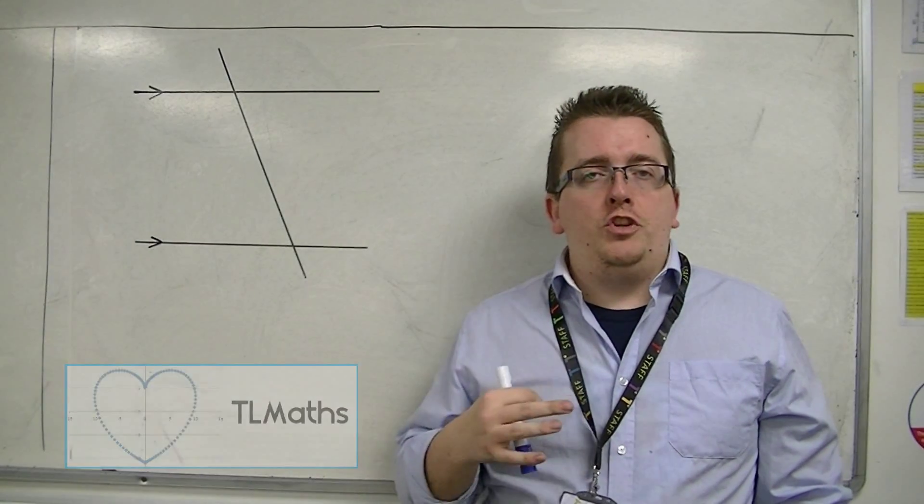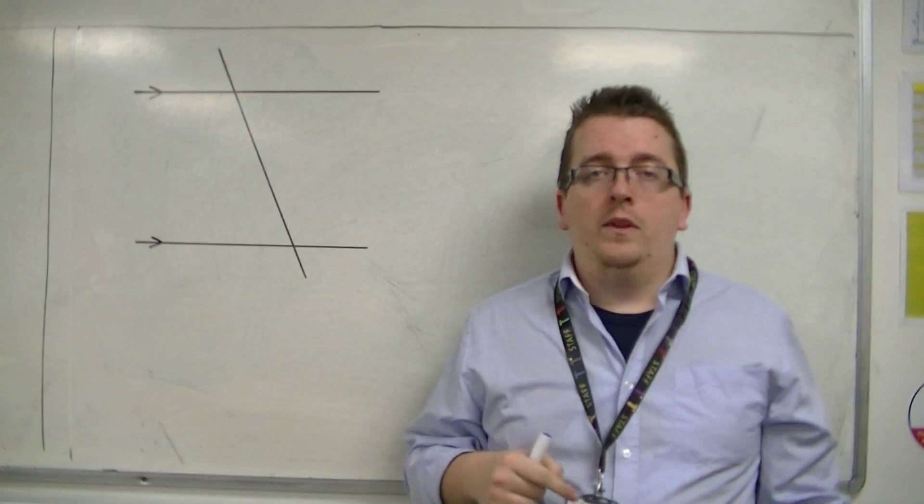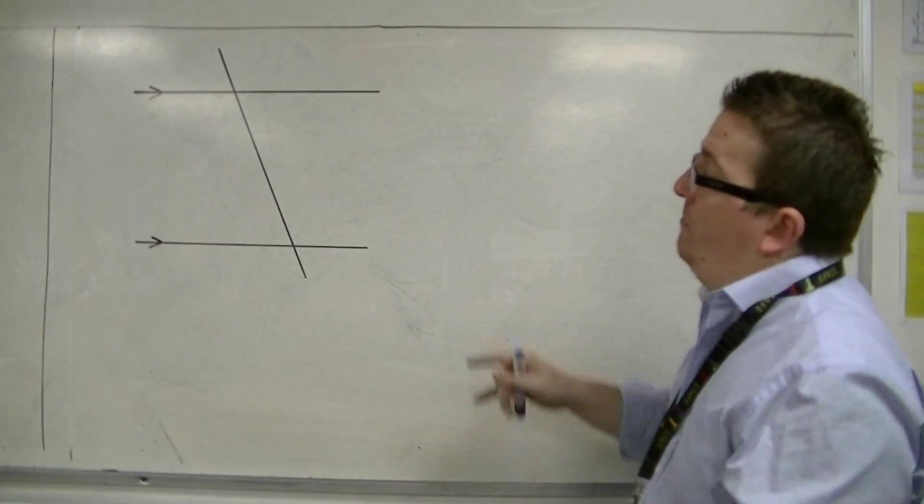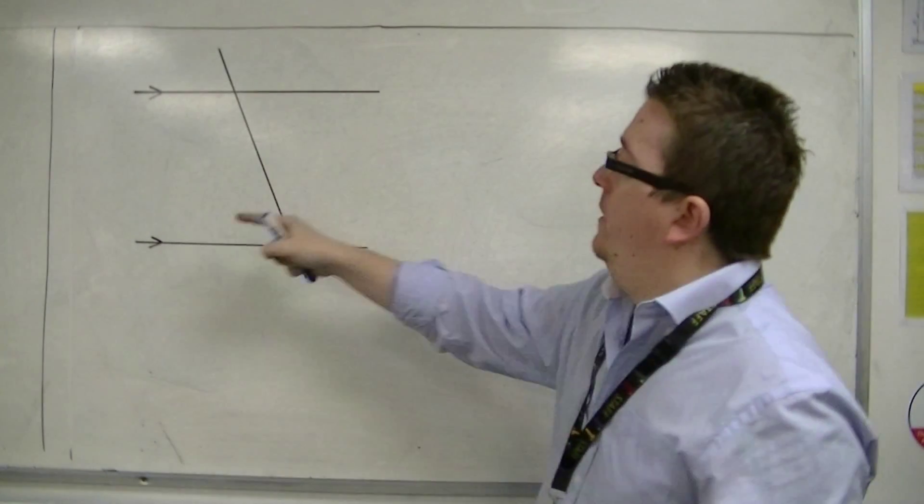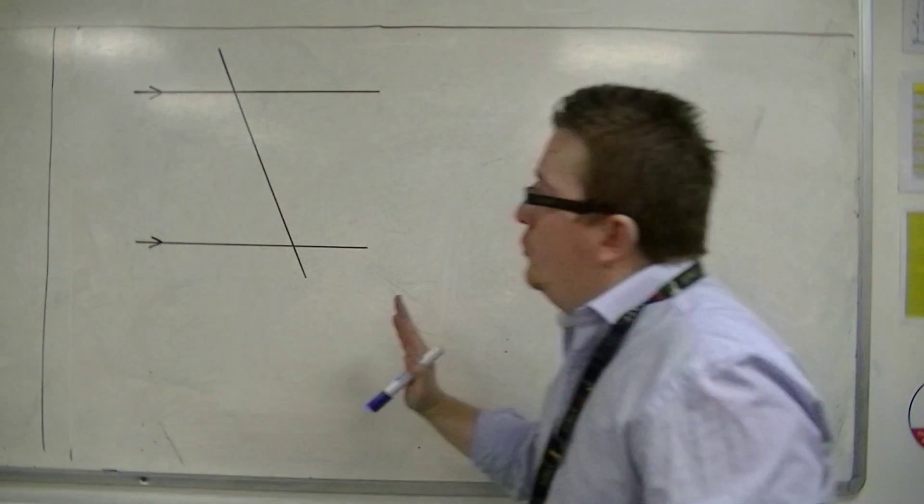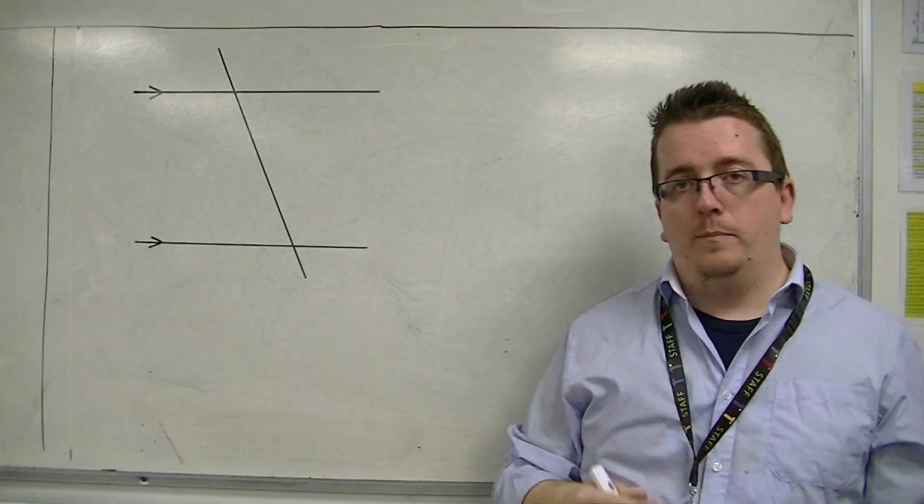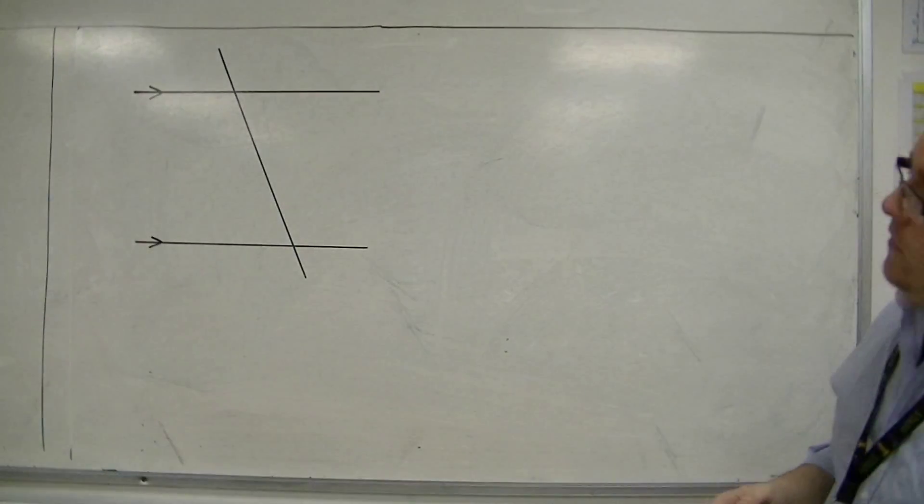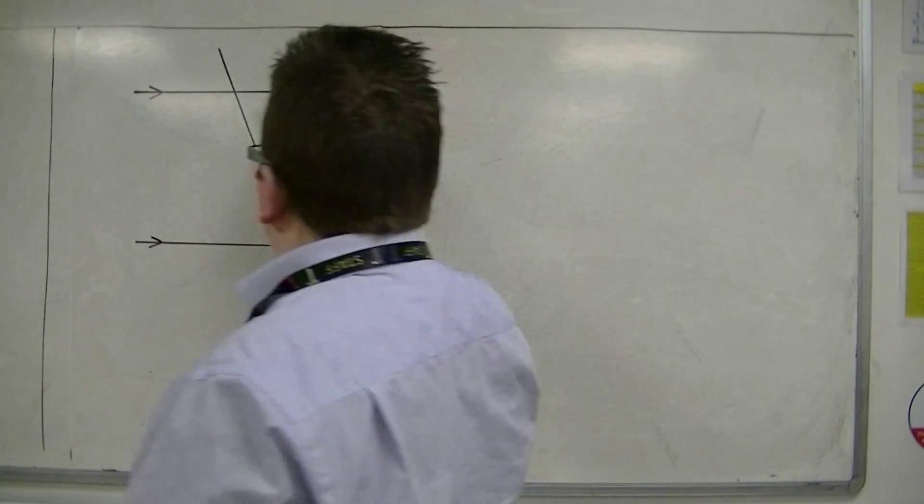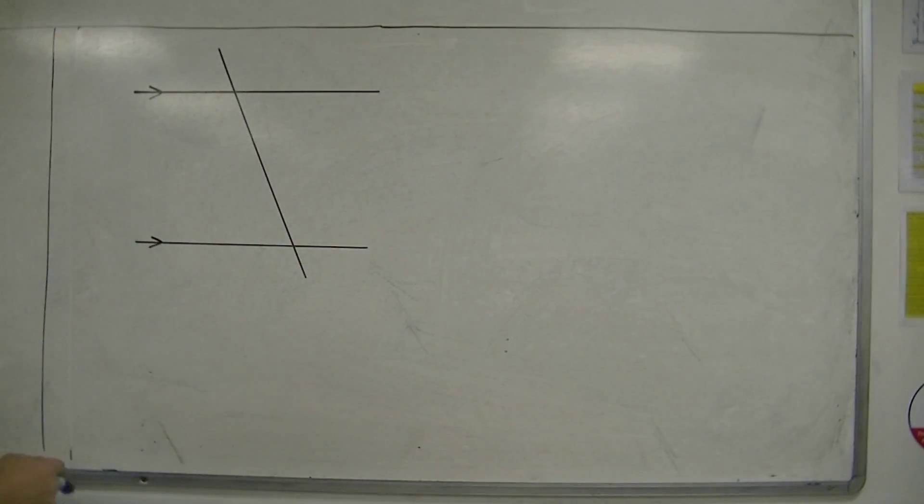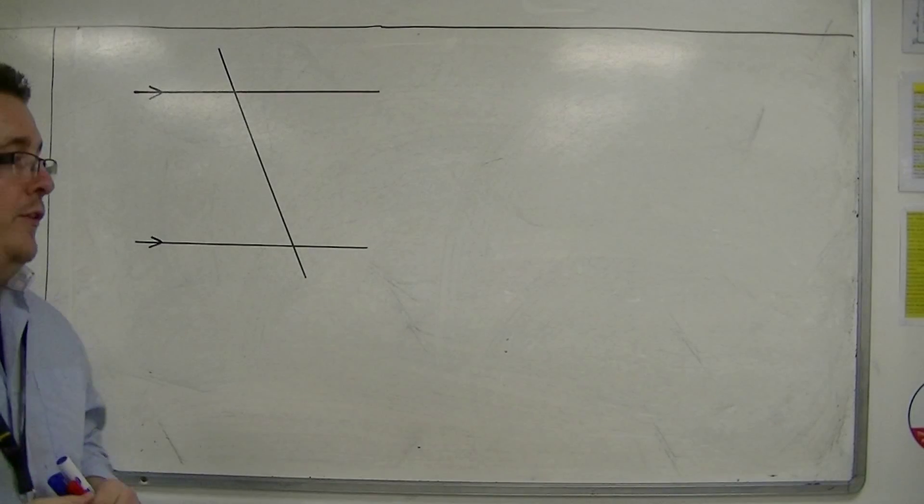In the previous video, I introduced parallel lines. Now let's look at a pair of parallel lines - here's one, and here's the other. I'm going to strike another line through the pair. This line is not parallel to either of those two, but it does create some interesting angles.